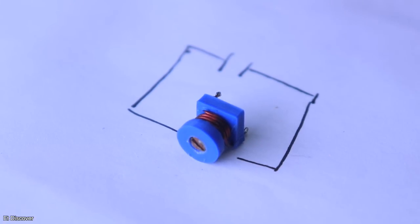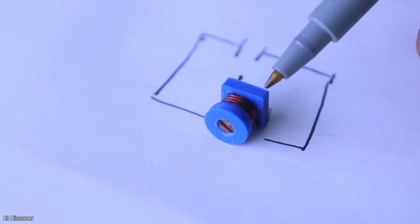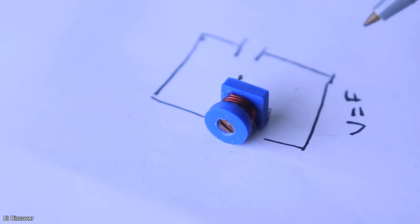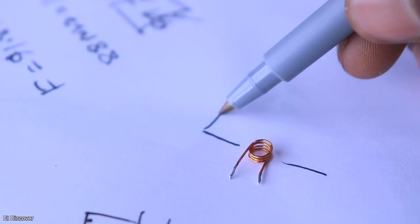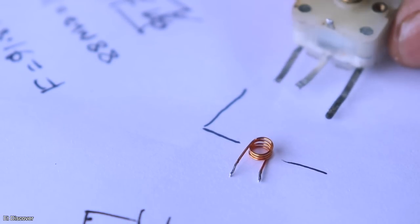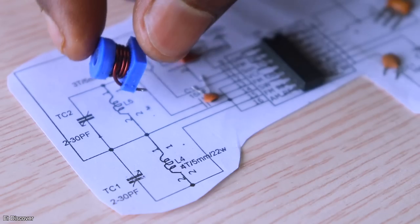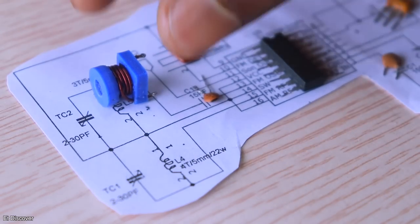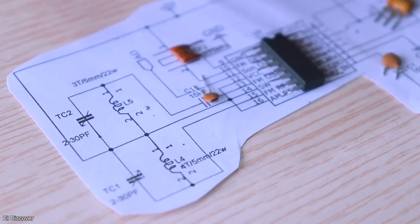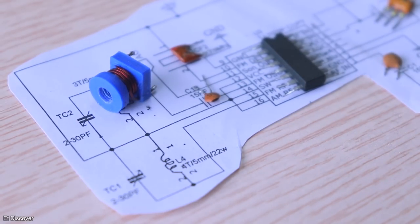If you fix the value of capacitance and increase and decrease the inductance value, then you can get any frequency. Similarly, if you keep the fixed value of the inductance, then if you change the value of capacitance, then you can select the frequency of your choice. In my case, I want to keep the fixed value of capacitance, and I want to reduce and increase inductance to select specific frequency.